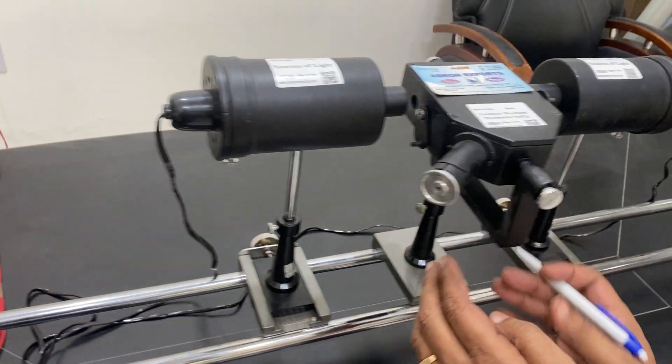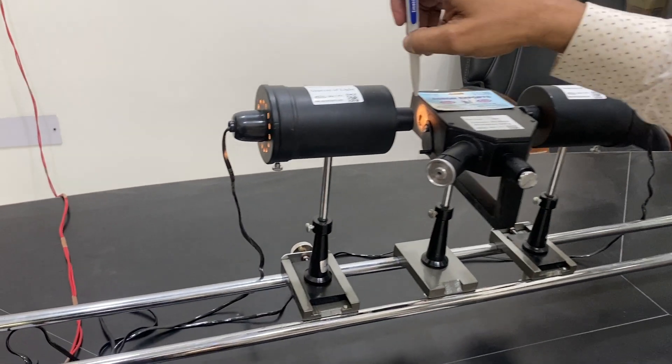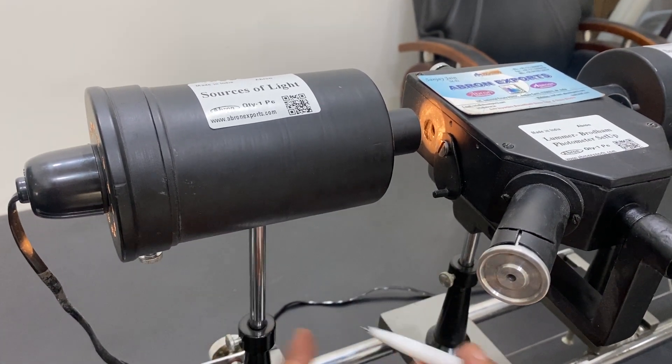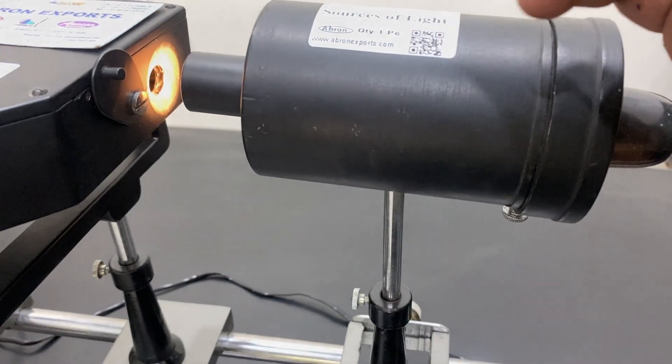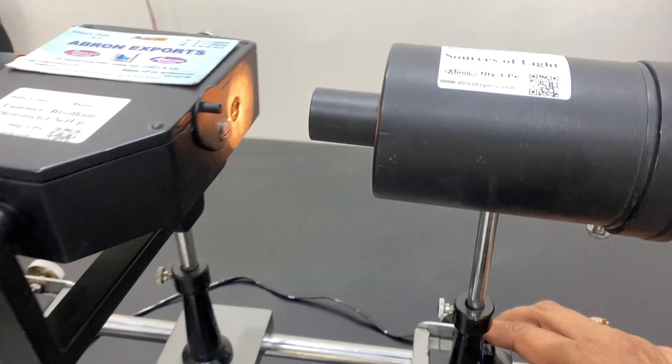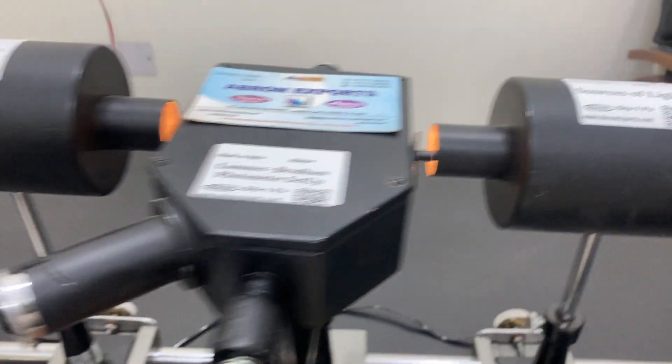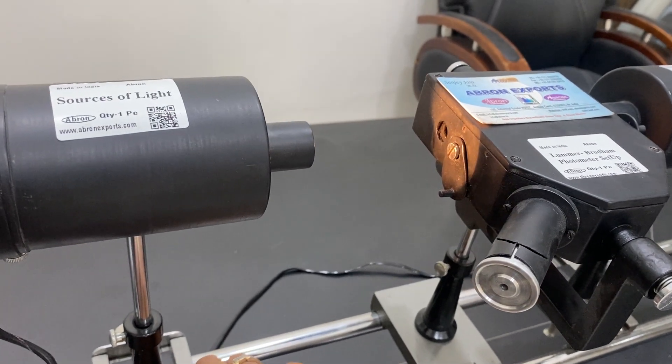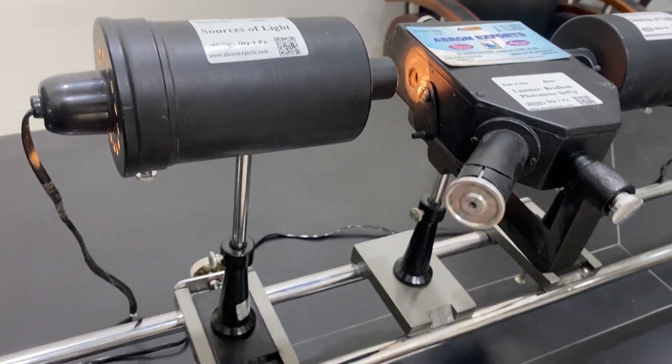Now I'll show you the experiment. The first step is to align them. See, the light source is coming to the center. I can unscrew it, make it up and down, and similarly the light is falling on the other side in the center. Even if I move it far, it is still falling on this button, and same is here. I can move it far and then light is falling on the center.